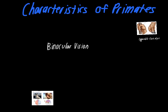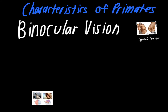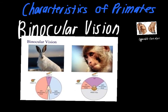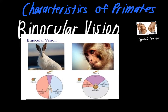Another characteristic is binocular vision. If you think about binoculars with two lenses side by side, that's basically how the eye socket is set up in primates. The eyes are set deep in the skull and on the front of the face. This allows our fields of view to overlap, giving us good depth perception and making us good judges of distance.